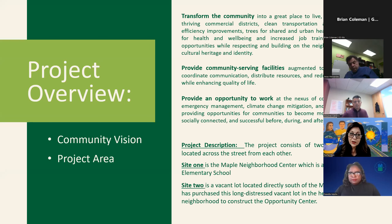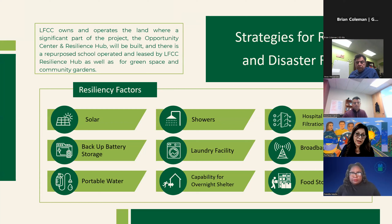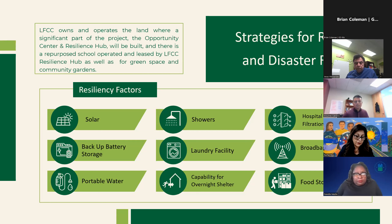Creating the resilience hub involves having backup power for climate emergencies so the site can serve as a hub for city, county, and state officials to access the community. Lessons from COVID highlighted the importance of community sites. Planned features include potable water, showers and laundry facilities for temporary housing, a satellite clinic with hospital-grade air filtration, broadband access, and food storage.